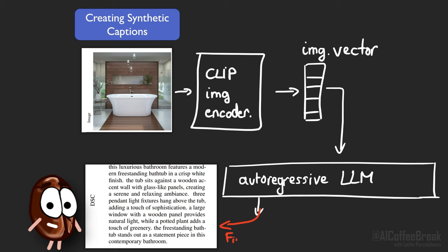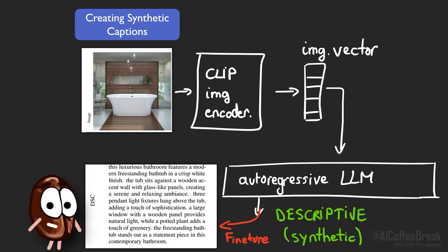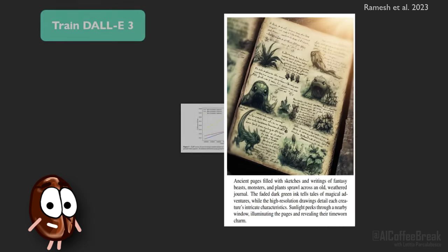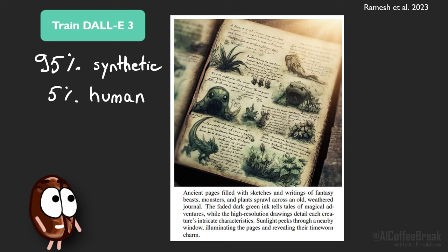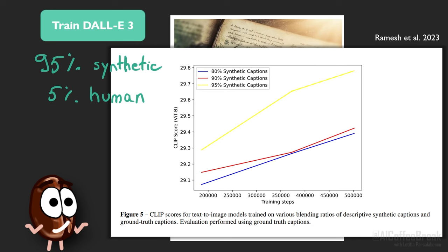So the authors fine-tuned the captioner on a small, human-written set of elaborate and detailed captions that describe many things in an image: the subject in detail, then the background, the whole scene, the colors objects have, the style of the picture, and so on. With this image captioner, they recaptioned the training dataset of DALL-E 3 and trained DALL-E 3 with 95% synthetic captions and 5% actual captions written by humans. The authors ablated between 80%, 90%, and 95% synthetic captions and found that 95% gives the greatest similarity between real captions and the generated image — though we do not see how 98% would play out in this graph.